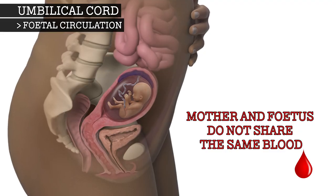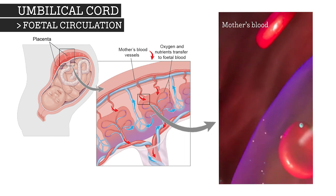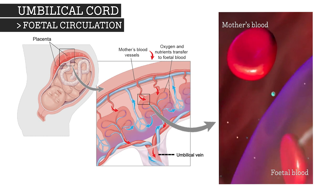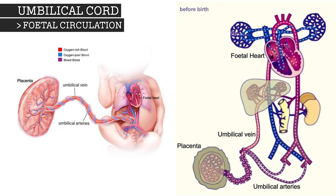The mother and the fetus do not share blood. Instead, oxygen and nutrients from the mother's blood pass through the placenta and into the fetal blood. This oxygen and nutrient-rich blood is then carried through the umbilical vein to the fetal heart. There, it makes its way around the body, depositing the oxygen and nutrients where needed and absorbing any waste by-products like carbon dioxide. By the time the blood has reached the umbilical arteries, it is depleted of both oxygen and nutrients and instead contains waste.